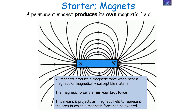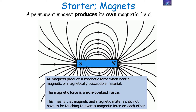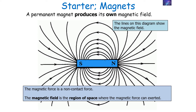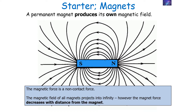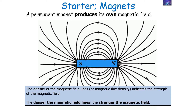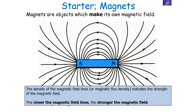A magnet projects a magnetic field to represent the area in which the magnetic force can be exerted. Magnets and magnetic materials do not have to be touching to exert a magnetic force on each other. The magnetic field is therefore a region of space where the non-contact magnetic force can be exerted. The lines on this diagram show the magnetic field. The magnetic field of all magnets projects into infinity; however, the magnetic force decreases with distance from a magnet. The density of the magnetic field lines — or more scientifically, the magnetic flux density — indicates the strength of the magnetic field.